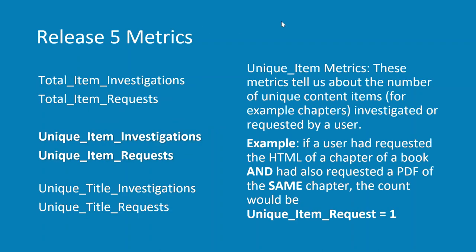Moving on to unique item investigations and unique item requests: this unique item metric tells us about the number of unique content items — for example, chapters, or a book — investigated or requested by a user. A good example is if a user had requested the HTML of a chapter and had also requested a PDF of the same chapter, the count would be unique item request one, because both those requests relate to the same unique item.